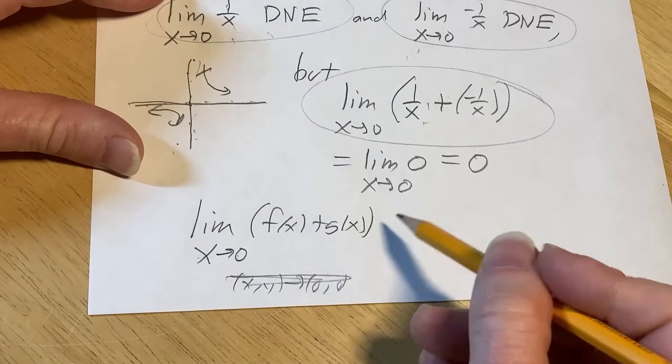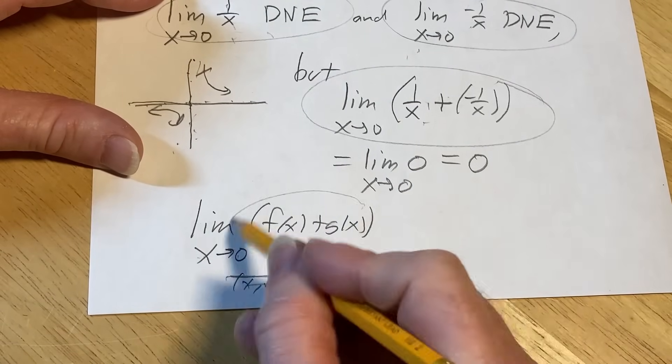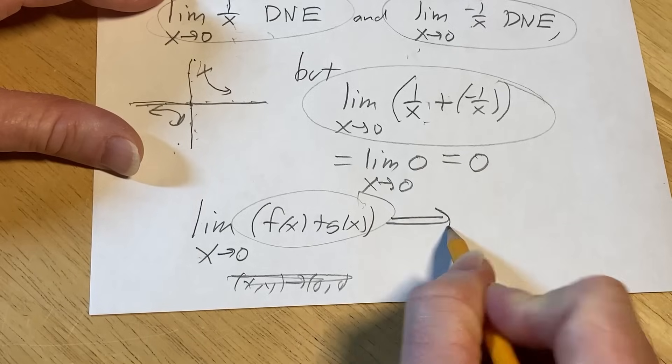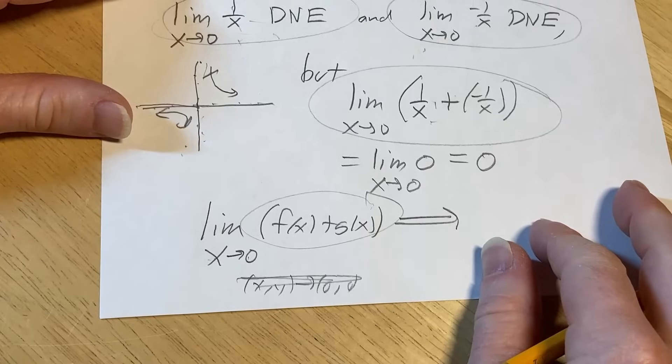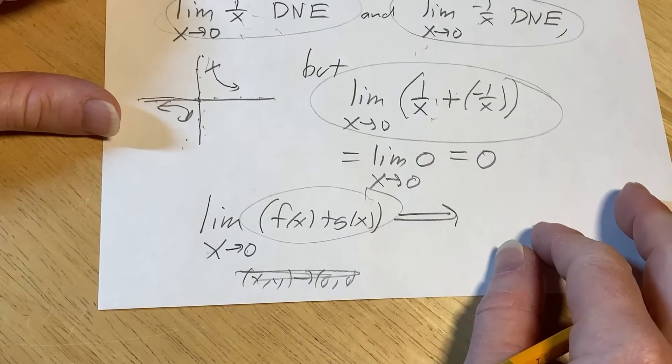So I did something like this. I said, well, because this exists, therefore the individual limits exist, which is incorrect. And so my entire proof was wrong. And I don't think I got any credit.